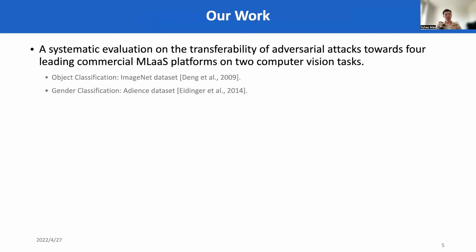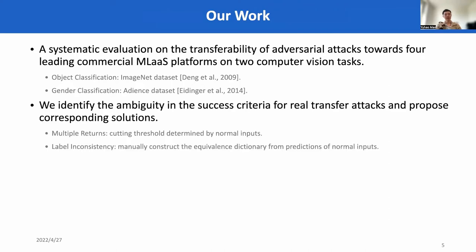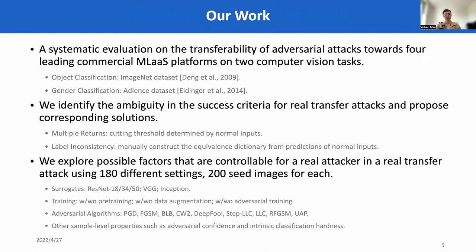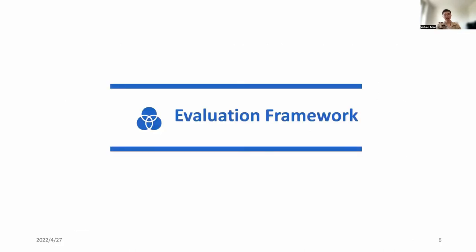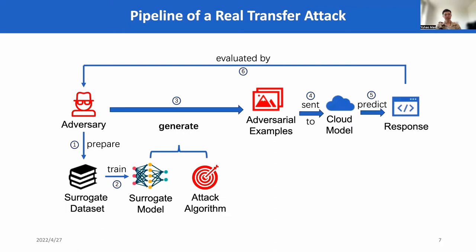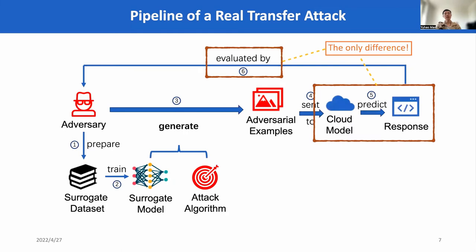We perform a systematic evaluation on the transfer attacks in real settings. We identify the ambiguity in the success criteria of a real transfer attack and propose corresponding solutions. Based on these techniques, we explore possible factors that can affect a real transfer attack using statistically sufficient settings. This is our pipeline of a real transfer attack. The only difference between a real transfer attack and a lab transfer attack is that the target model is a cloud model, and the response contains multiple levels of ambiguities.